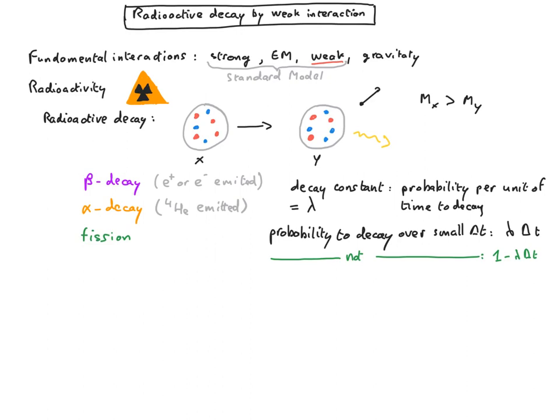Because of the decay, the nucleus has a probability p of t, which is smaller than 1, to still be here at time t. Therefore, the probability for the nucleus to be here at time t plus delta t is p of t times 1 minus lambda delta t.